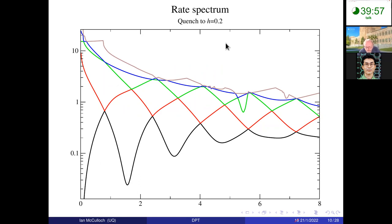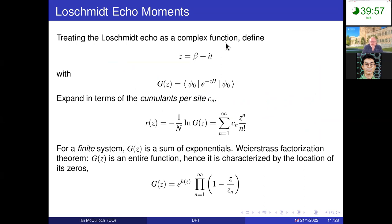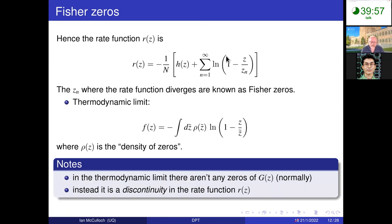It makes sense to treat the Loschmidt echo as a complex function and incorporate imaginary time evolution into our protocol as well. This hasn't been done so much when looking at dynamical quantum critical phenomena, but it turns out to be a really useful thing to do — it lets us analyze the critical phenomena much more easily.